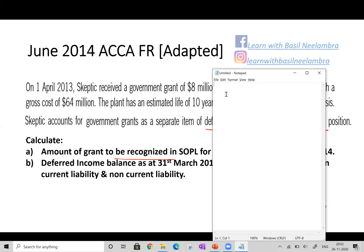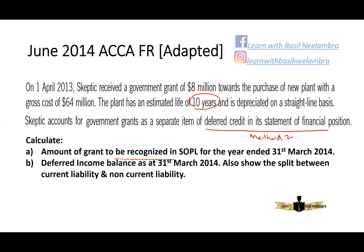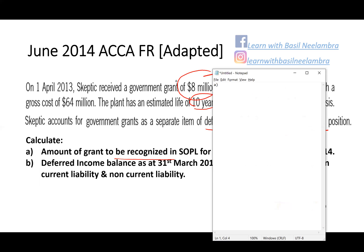First, we need to find the amount to be recognized in SOPL. The amount to be recognized should be based on the depreciation method. The useful life is 10 years and the government grant received is $8 million. So the amount to be recognized as income in SOPL is $8 million divided by 10 years, which equals $0.8 million per year.